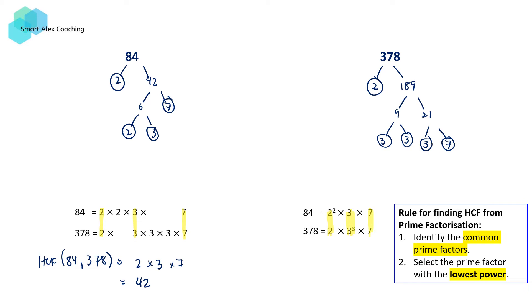And what we're going to do is we're going to select the prime factor with the lowest power. So here we've got 2 squared and 2 — 2 has got the lowest power, so we're going to select this 2. Then 3 and 3 cubed — 3 has got the lowest power.